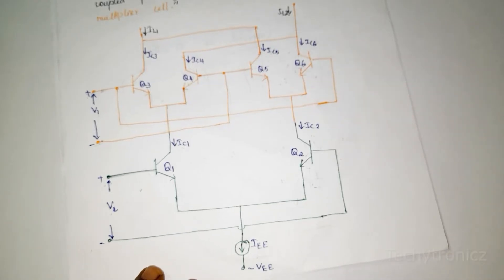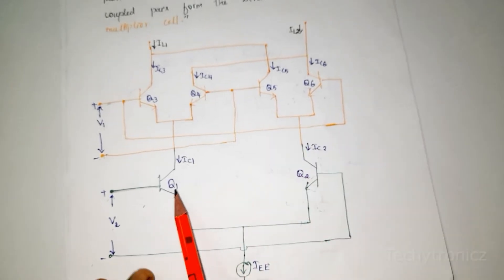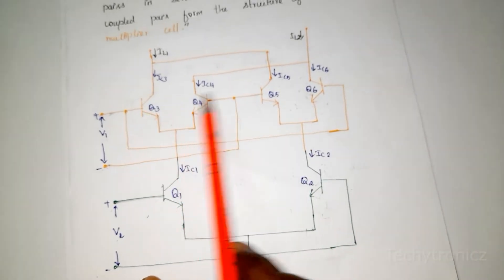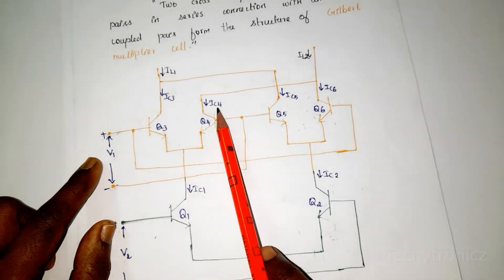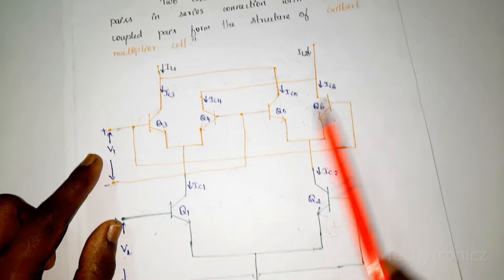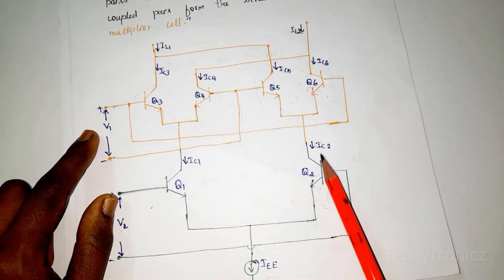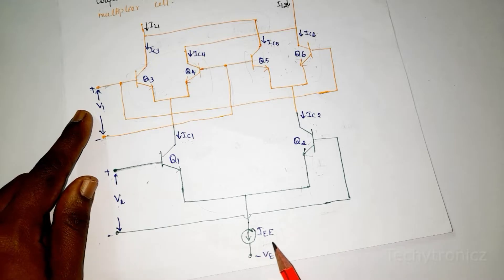Now let us assign names to the transistors and their collector currents. The transistors are Q1, Q2, Q3, Q4, Q5, and Q6. The collector currents are IC3 for Q3, IC4 for Q4, IC5 for Q5, IC6 for Q6, IC1 for Q1, and IC2 for Q2. The emitter bias current is IEE.